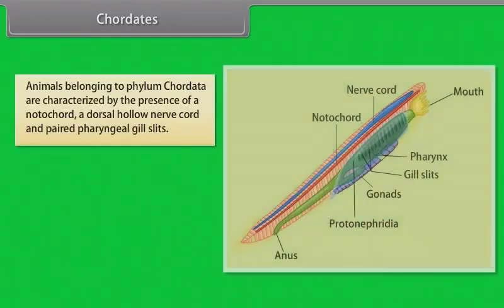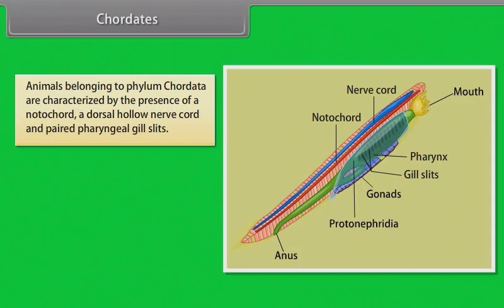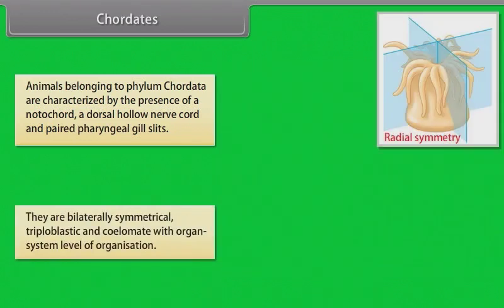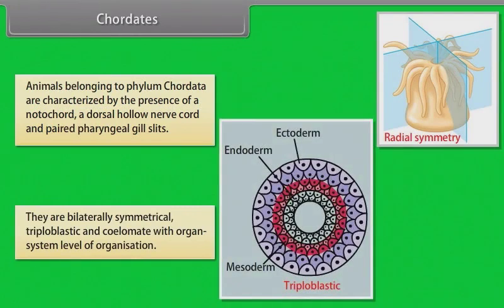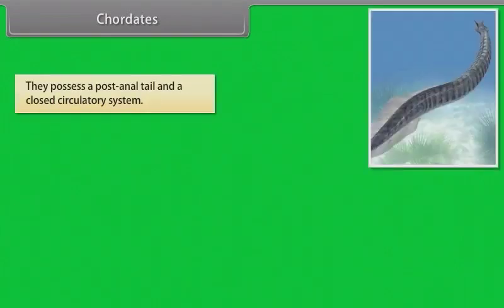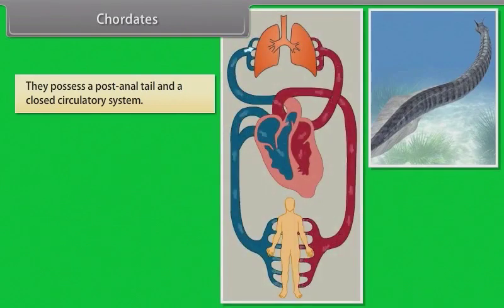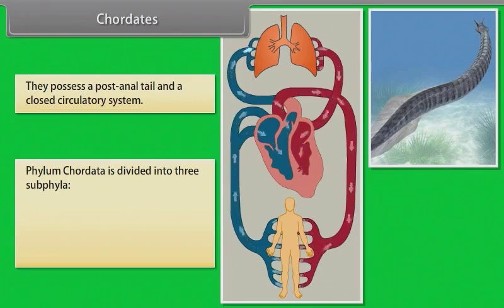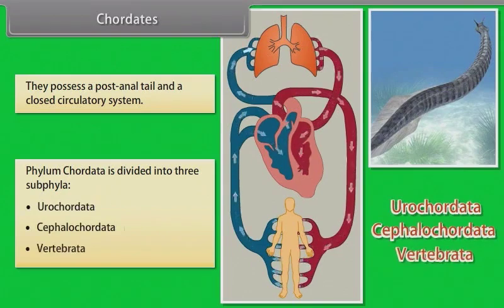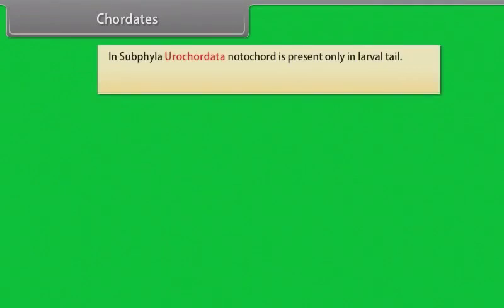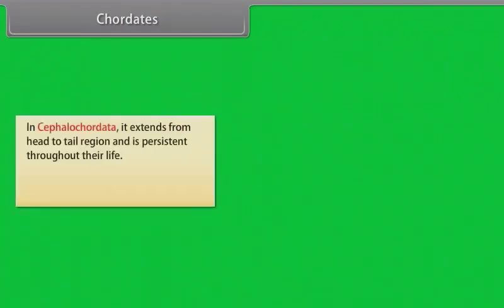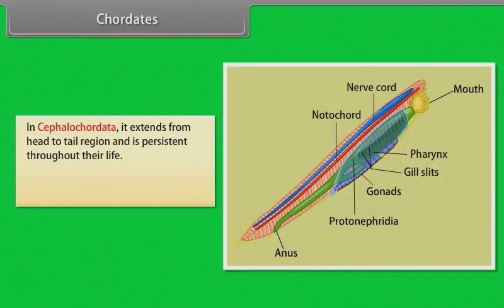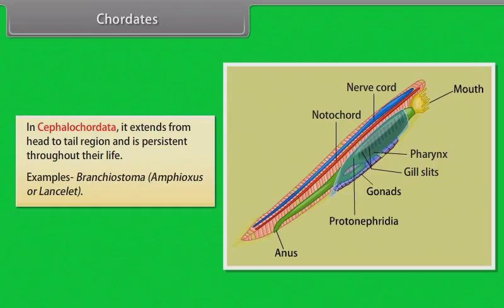Chordata: Animals belonging to phylum chordata are characterized by the presence of notochord, a dorsal hollow nerve cord and paired pharyngeal gill slits. They are bilaterally symmetrical, triploblastic and coelomate with organ system level of organization. They possess a post-anal tail and a closed circulatory system. Phylum chordata is divided into three subphyla: urochordata, cephalochordata and vertebrata. In urochordata, notochord is present only in the larval tail. Examples: Ascidia, Salpa, Doliolum. In cephalochordata, it extends from head to tail region and is persistent throughout life. Examples: Branchiostoma, Amphioxus and lancelet.